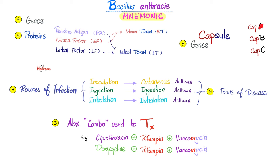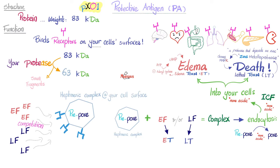Here's a cool mnemonic about Bacillus anthracis. We're talking three genes — cap A, cap B, and cap C — that gave us the capsule. Three routes of infection by which you can get anthrax: inoculation, ingestion, or inhalation. These give three forms of anthrax: cutaneous, ingestion, and inhalation anthrax. And we treat anthrax with a combination of about three antibiotics — such as cipro plus rifampin plus vanco, or doxy plus rifampin plus vanco — with other options too.